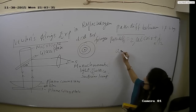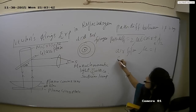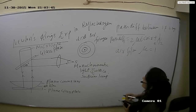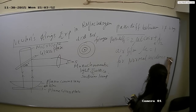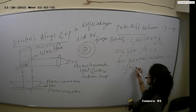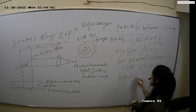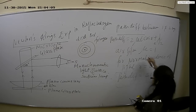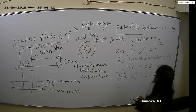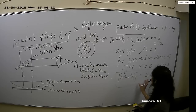Since an air film is formed, the refractive index μ equals 1. For normal incidence of light, the angle of reflection R equals 0, and since cos 0 equals 1, the path difference simplifies to 2T plus λ/2. This is the path difference in Newton's ring experiment in reflected system.